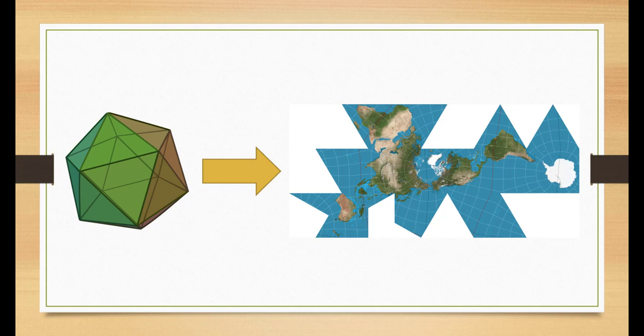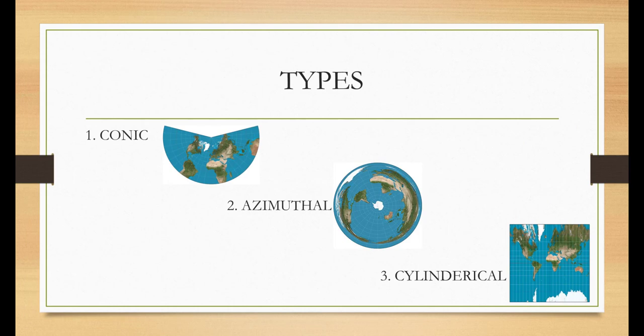If we go for a cylindrical room, we get cylindrical projection. There are different types of projections, but we mostly hear of conic, azimuthal, or cylindrical projection types.